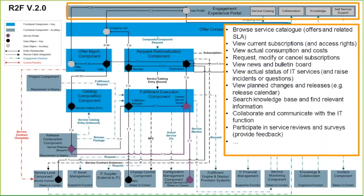A key function shown in the diagram is the engagement experience portal — basically the IT service portal, and a crucial part of the request to fulfill architecture. It provides a one-stop shop for engaging with the business and IT. This portal provides a unified experience for people to request new services, view existing services, manage their subscriptions, consume knowledge, report incidents, and provide collaboration with IT. The idea is to have a single portal which optimizes communication between the business and IT — not just for requesting services but also for viewing the actual status of a service, reporting incidents, searching the knowledge base, viewing planned releases, and completing customer surveys.